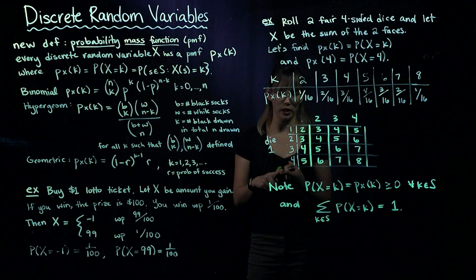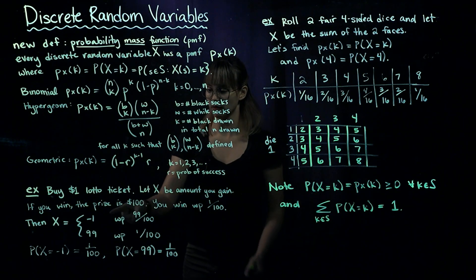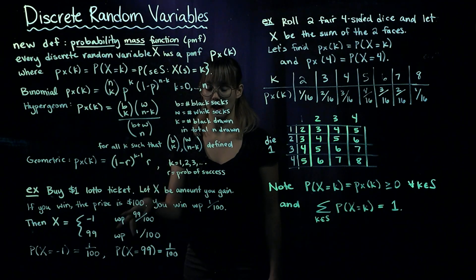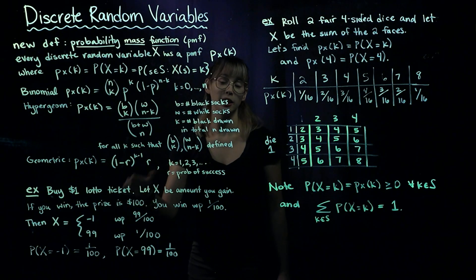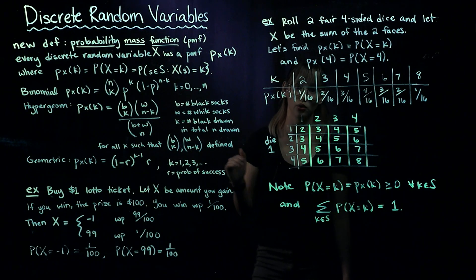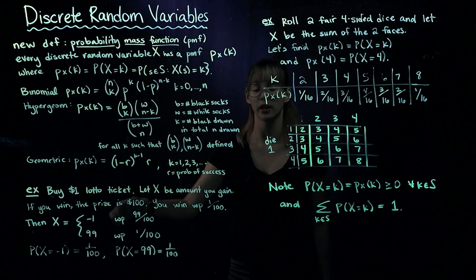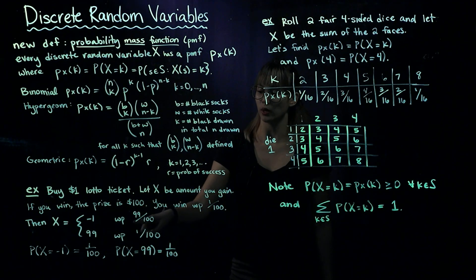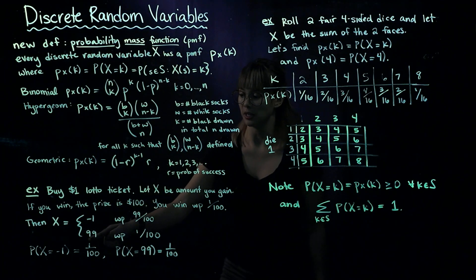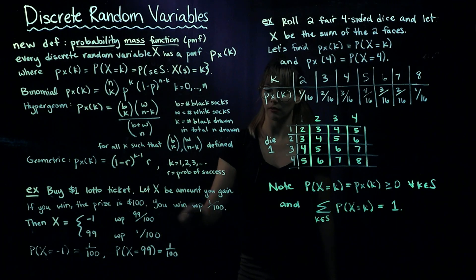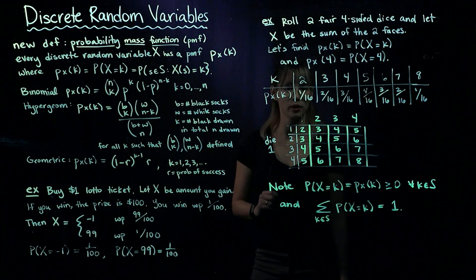X takes on two values: negative one dollar and ninety-nine dollars. The probability X equals negative one is the probability of losing, which is 99 out of 100. The probability X equals 99 is the probability of winning, which is 1 out of 100. This is our PMF.